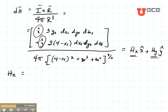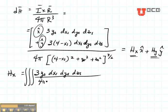That's going to be, just take the part that's in front of the X. That's 3YS DXS DYS DZS, and we're going to do a triple integral, a volume integral, over 4π times [(4 minus XS)² plus YS² plus ZS²] all to the 3/2 power.